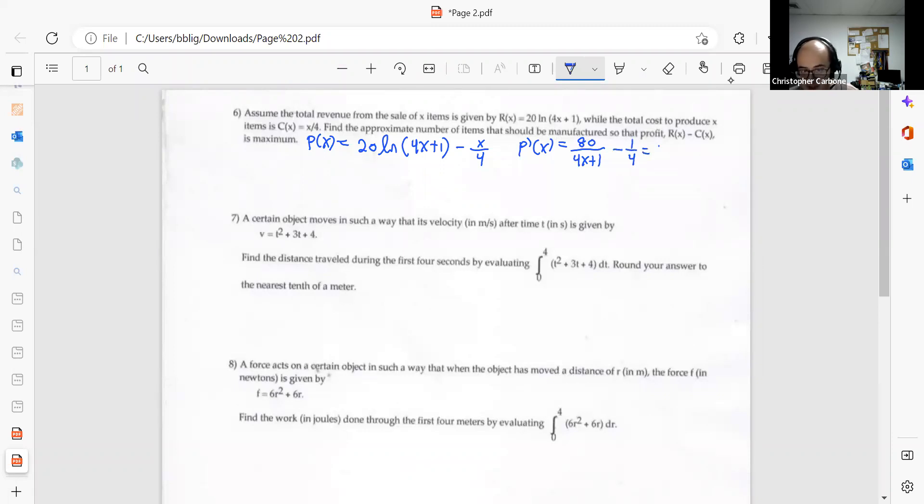To find this maximum, we need to set that derivative equal to 0. By adding a fourth, multiplying by 4, multiplying by 4x plus 1, we would obtain 320 is equal to 4x plus 1. And solving for x gives us a value of 80.